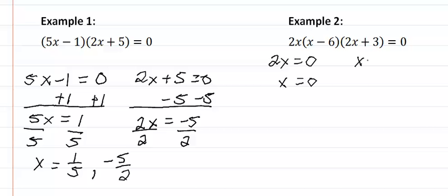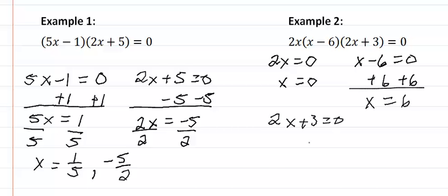We have x minus six equal to zero, add six to both sides, and we get x is equal to six. And then our 2x plus three equal to zero, subtract three. We have 2x equal to negative three, divide by two and we're going to have that x equals negative three halves.